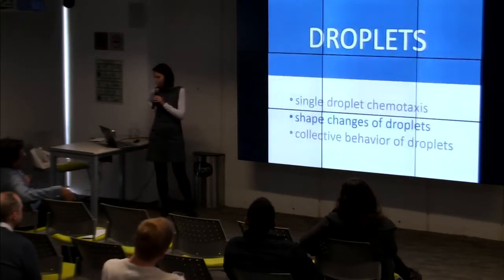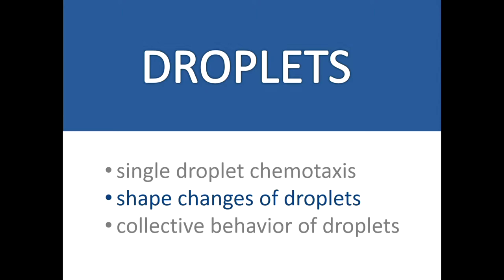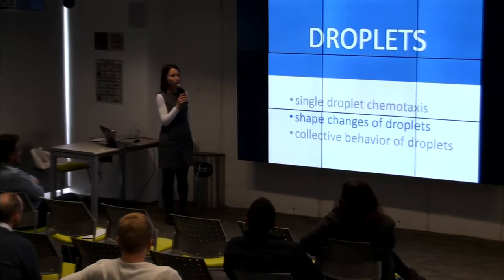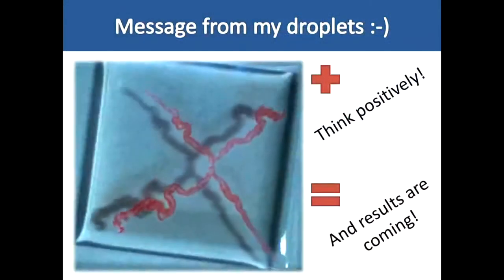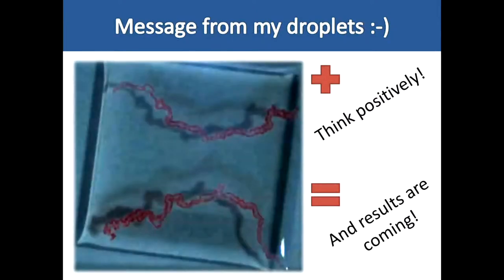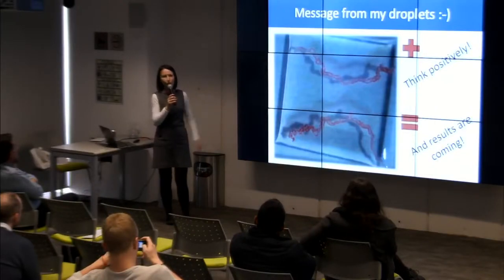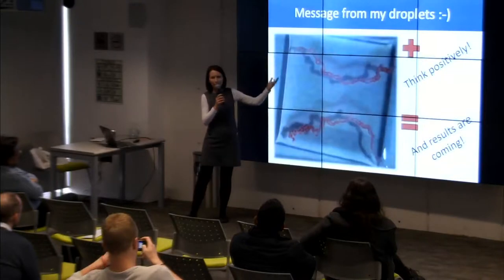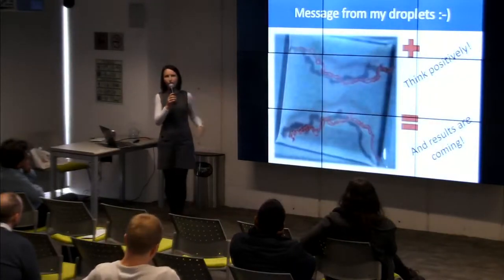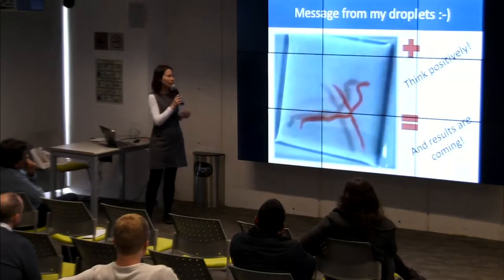The second part of my talk will be about shape changes of the same droplets. How I started to do experiments with shape changes is an interesting story. The first part of my talk was about chemotaxis, and one experiment takes about five to ten minutes. If you have an experimental setup that is pretty simple — just a glass slide with liquid and a droplet — over time water evaporates from the system and the decanol droplet starts to change its shape.